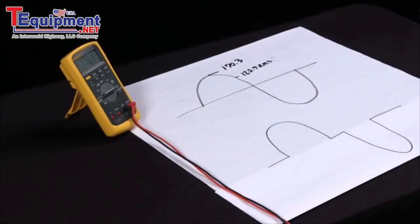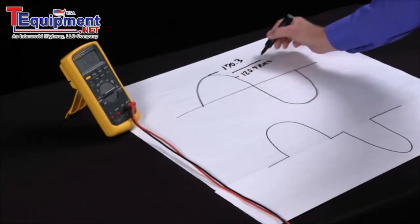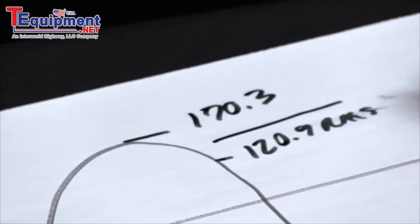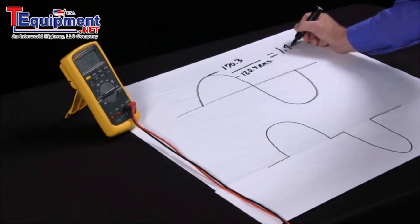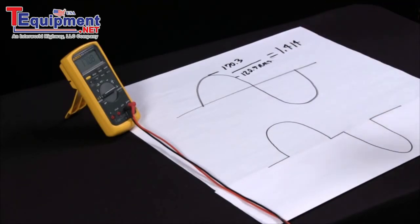Now there's something called the crest factor, which if I divide the RMS into the peak on a nice clean sine wave, this should come to 1.414. Now we can all divide 120.9 into 170.3 and come up with 1.414.